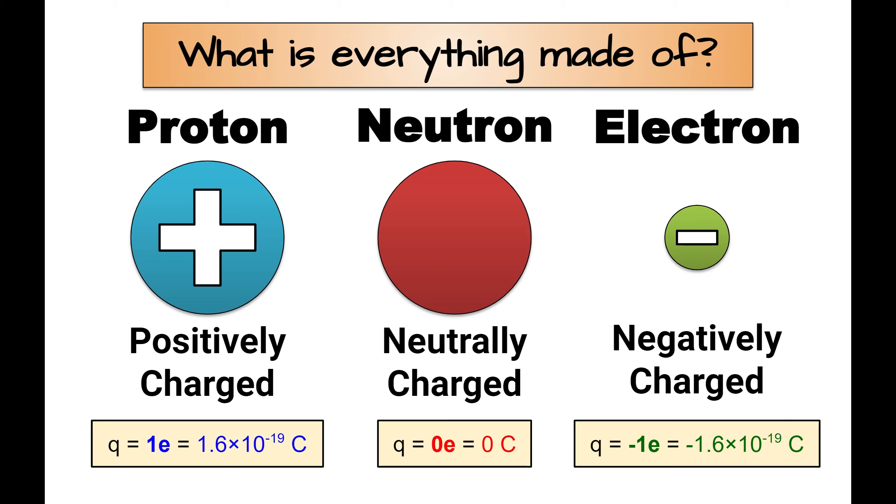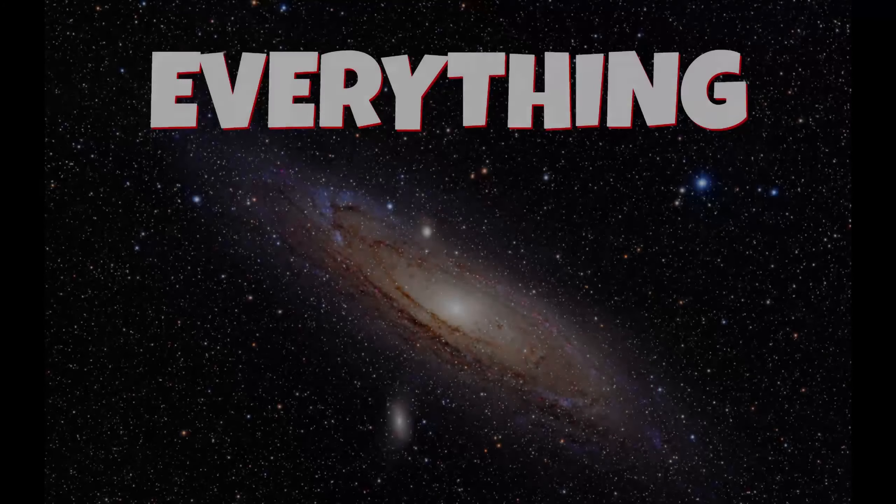If you look at the charge of a proton and an electron, they have exactly the same amount of charge, but with different signs. Protons are positive and electrons are negative, but the amount of charge is the same. So looking back up to the top of this slide, when I asked what is everything made of, I really meant everything.